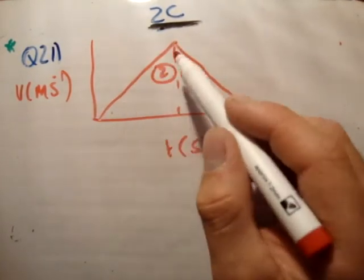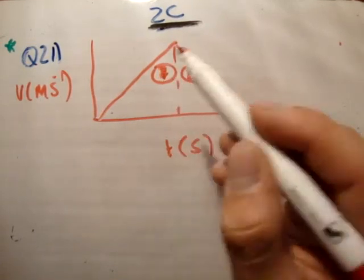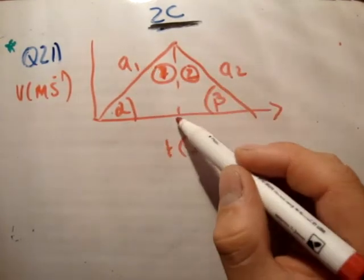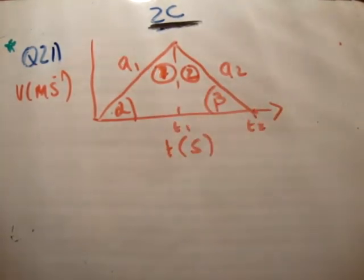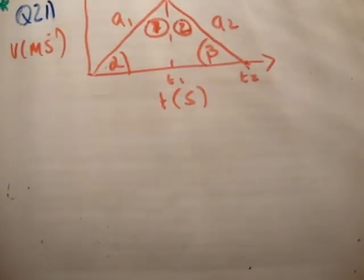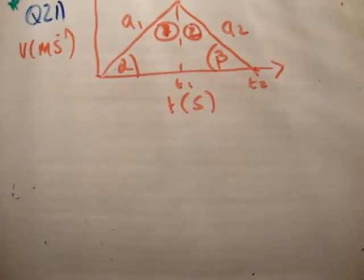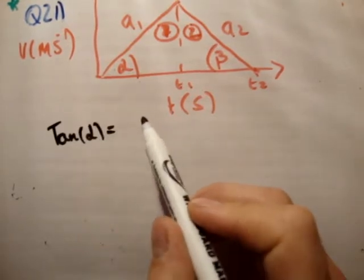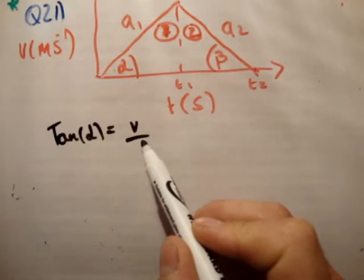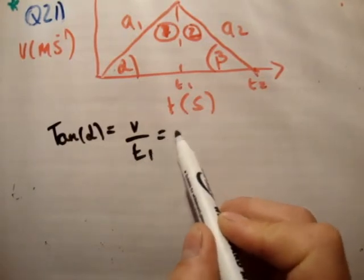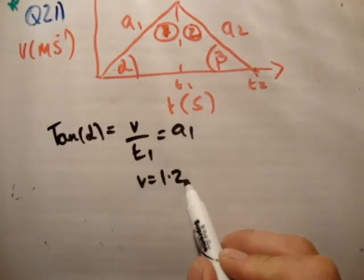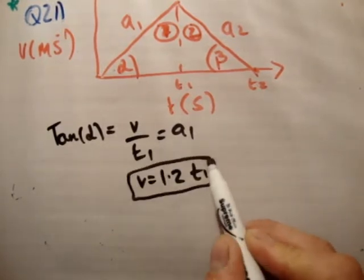Reason 1, 2, that's 1, that's 2, alpha, beta, A2, A1, T1, T2. So, I'm sure you're able to follow that at this stage, because we've done a hell of a lot of questions similar to this. So, let's go again. Tan alpha is equal to the opposite, which is V over the adjacent, which is T1, is equal to A1. Now, we know what A1 is equal to. It's equal to 1.2. So, V is equal to 1.2 times T1. That's the first thing.